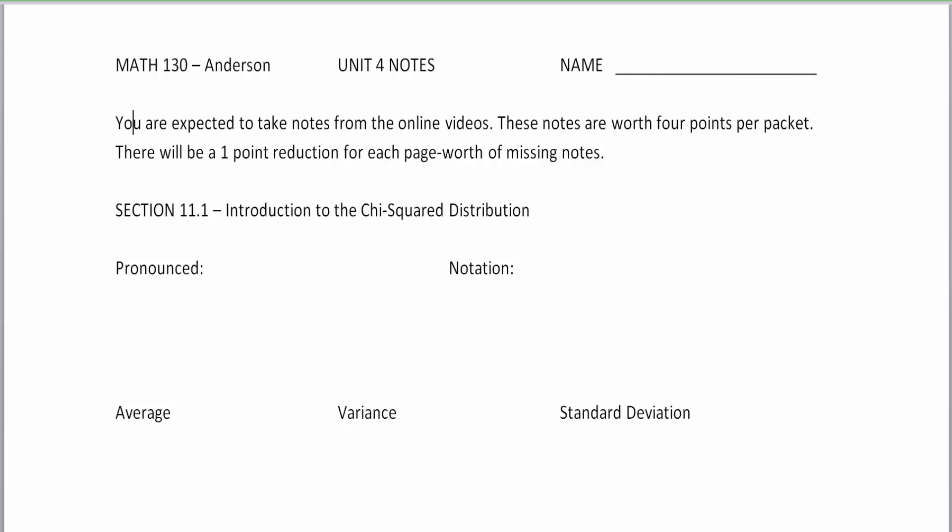So for this unit we're going to learn about the chi-squared distribution. First of all, you got to learn that this is not the chi-squared distribution, it's chi, the Greek letter chi, pronounced k-i, chi-squared distribution.